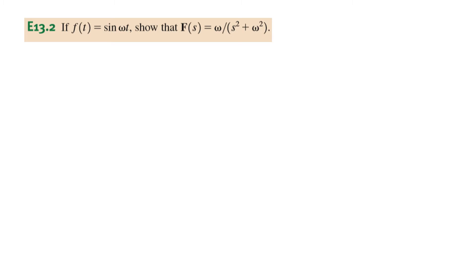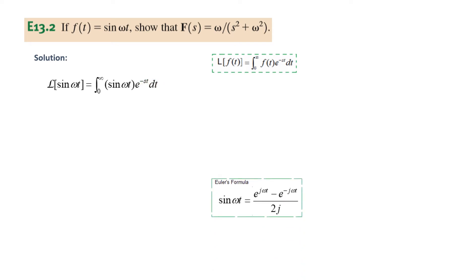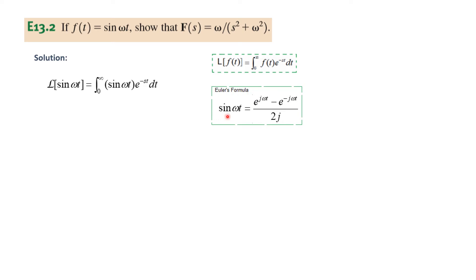Now the second problem: if F(t) is sine omega t, show that F(s) is omega over s squared plus omega squared. We write the formula again. According to the definition, the Laplace of sine omega t is the integral of sine(ωt) times e raised to the power minus st dt. From Euler's formula, sine omega t is represented as e^(jωt) minus e^(-jωt) divided by 2j, and we plug in that value.